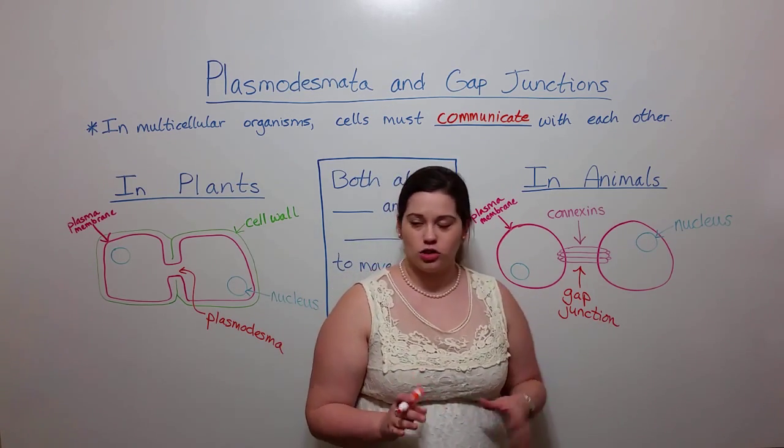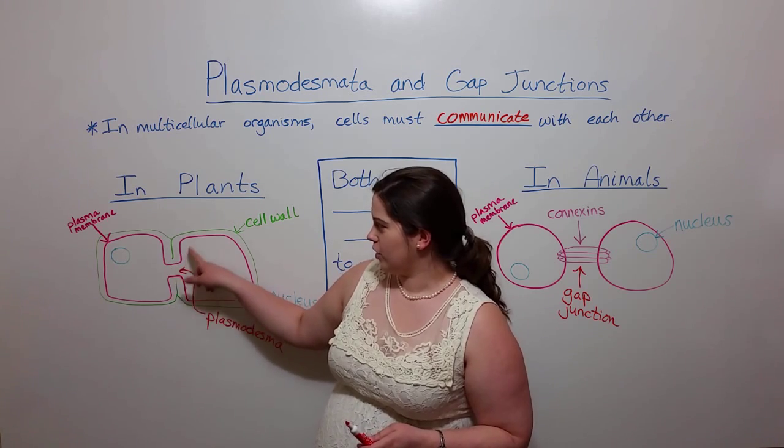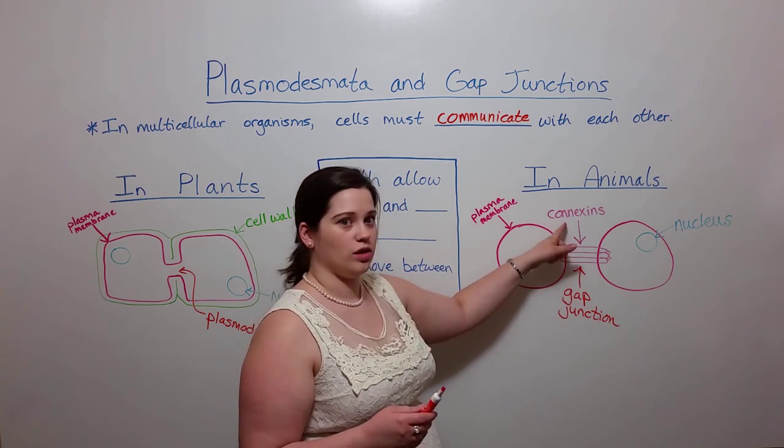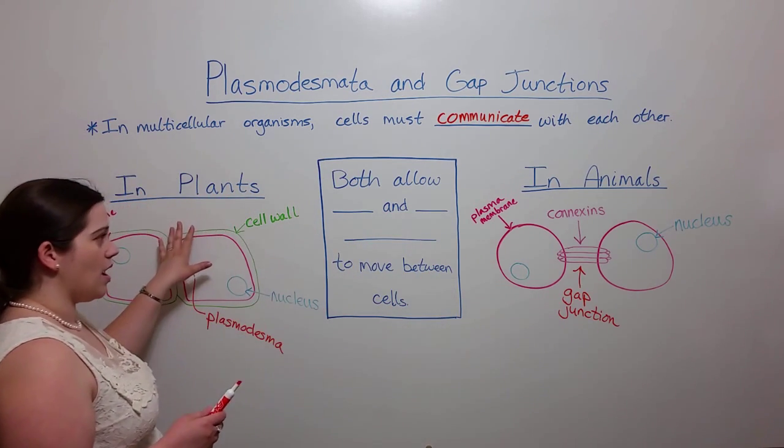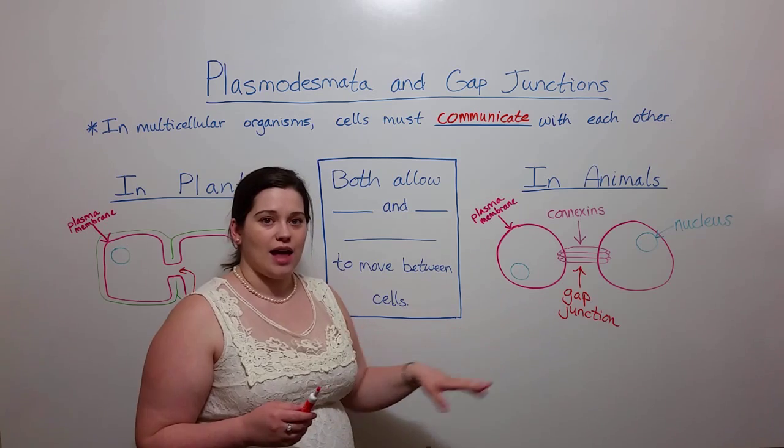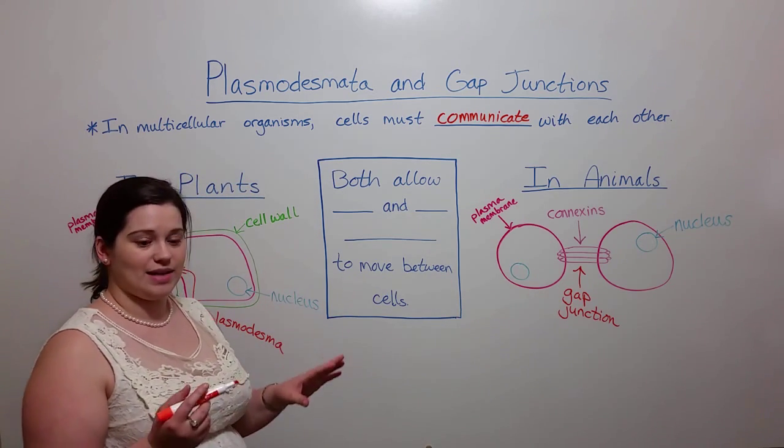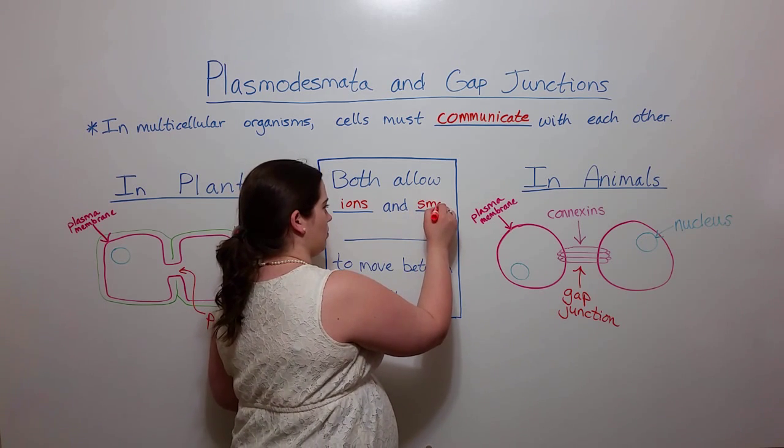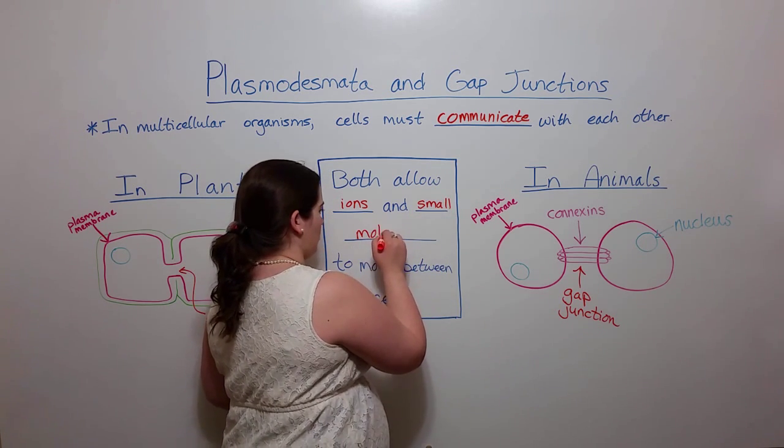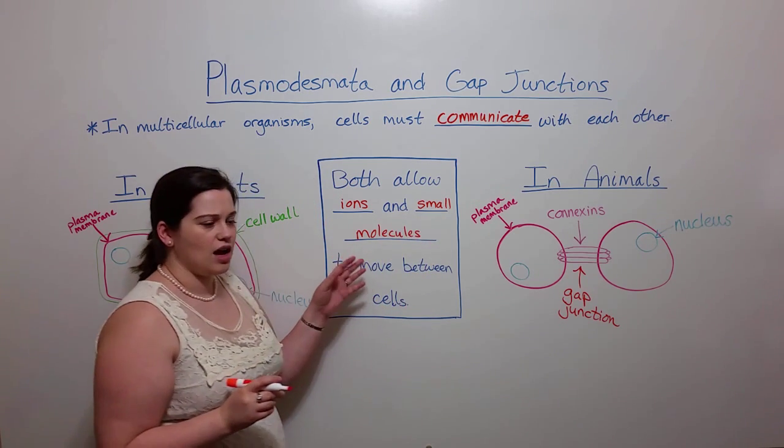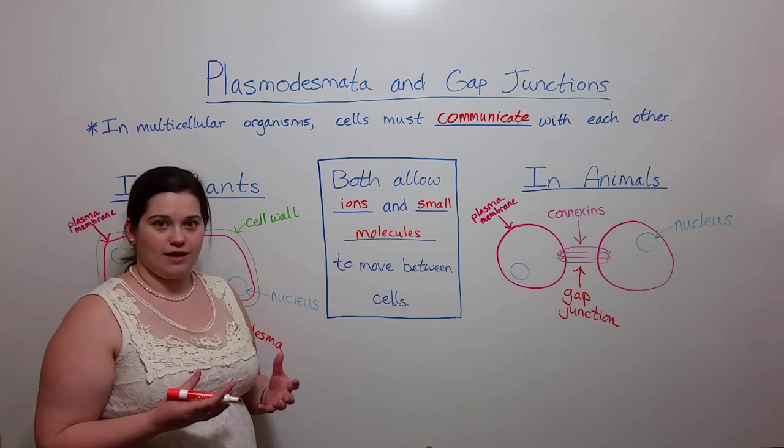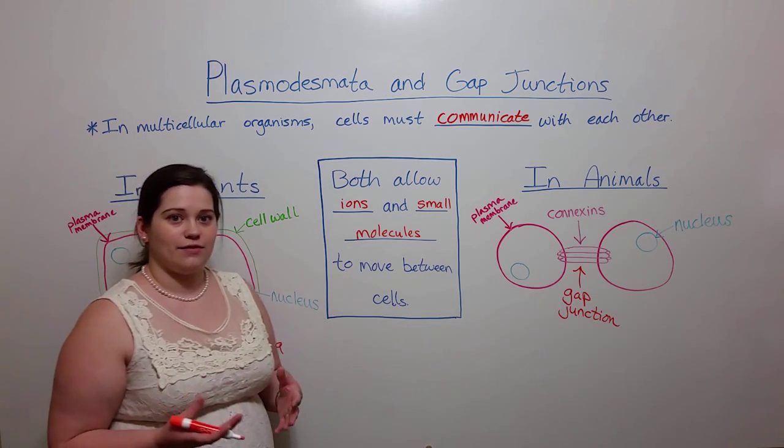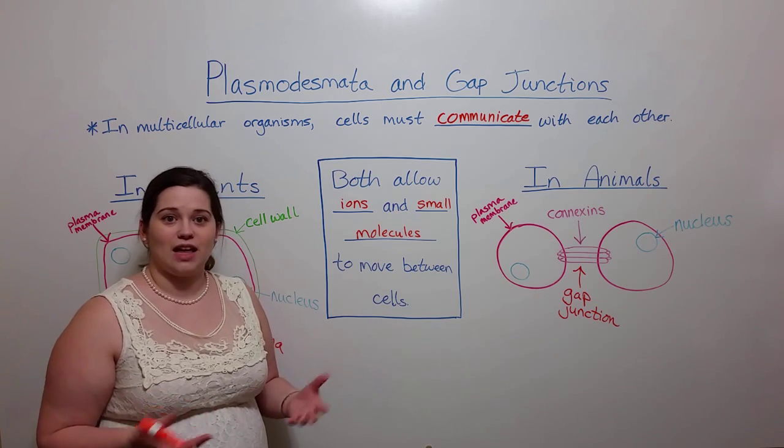So even though we have different structural features where one is actually a continuous cell membrane and the other, we have separate plasma membranes but connected with these proteins called connexins, still both plasmodesmata and gap junctions allow two important things to move between cells. Those are ions and other small molecules. And it is these ions and small molecules that act as signaling factors where one cell can send them to the other cell in order to relay a specific message. And this results in some kind of cellular response.